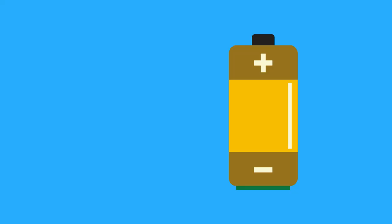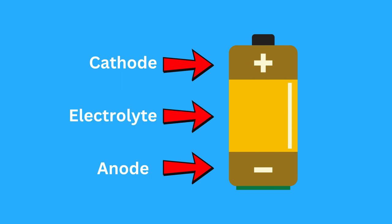Inside a battery, we have two main parts. The anode, which is the negative side, and the cathode, which is the positive side. These are separated by an electrolyte.